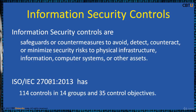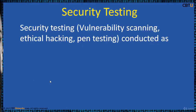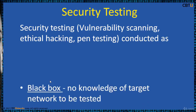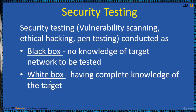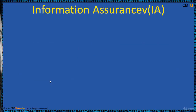ISO/IEC 27001 has 114 Controls in 14 Groups and 35 Control Objectives. Security Testing includes Vulnerability Scanning and Ethical Hacking or Penetration Testing. This is conducted in two environments: Black Box — no knowledge of the target network to be tested — and White Box — having complete knowledge of the target.